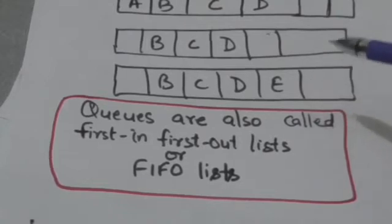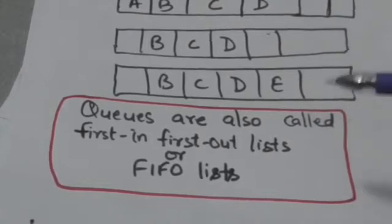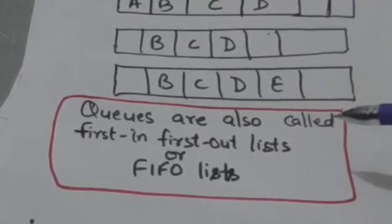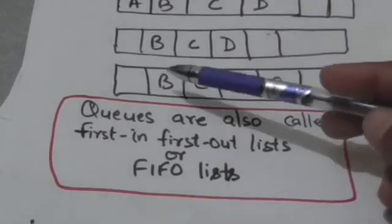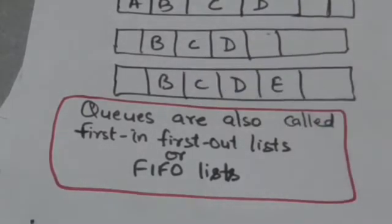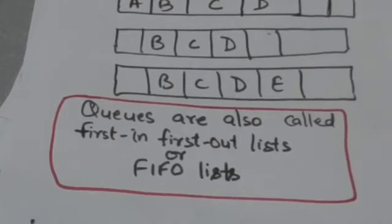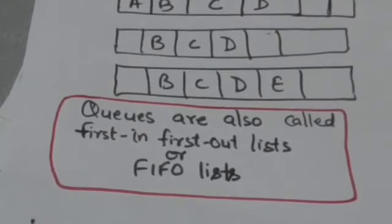Now suppose we have to delete another element from this queue. Then we can delete only B because it is the front element. After deletion of B, C will be the front element of the queue.